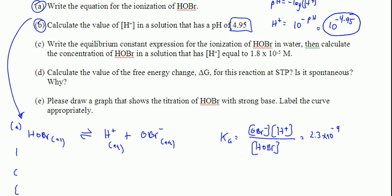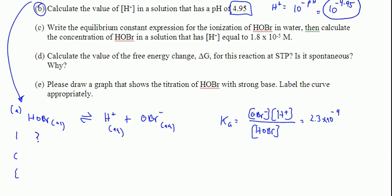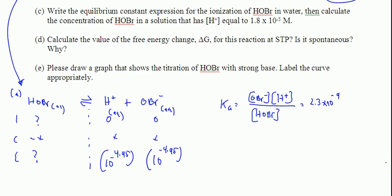Now, this problem initially didn't give us HOBR concentration. We know that this is zero and this is zero always. We know that it's going to shift to the right. So, we don't know this. We do now know H+, which is 10 to the negative 4.95. We also know OBR- because they're both X. 10 to the negative 4.95. So, we can continue the problem. I'm going to move on to this one on the next video. So, take care, everybody. I'll see you in a sec.